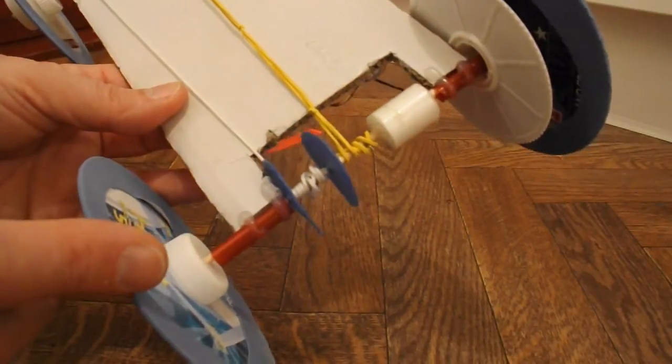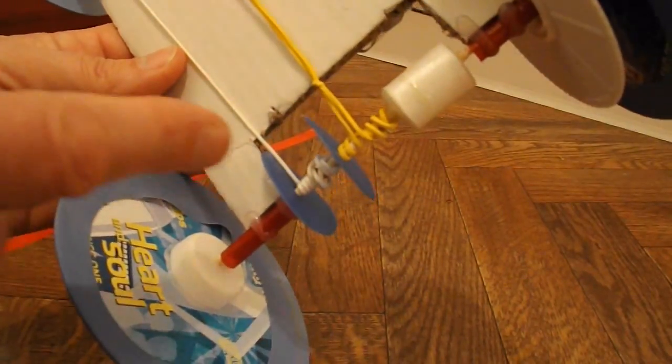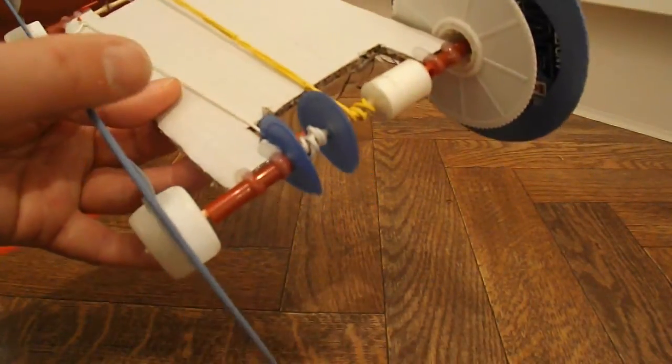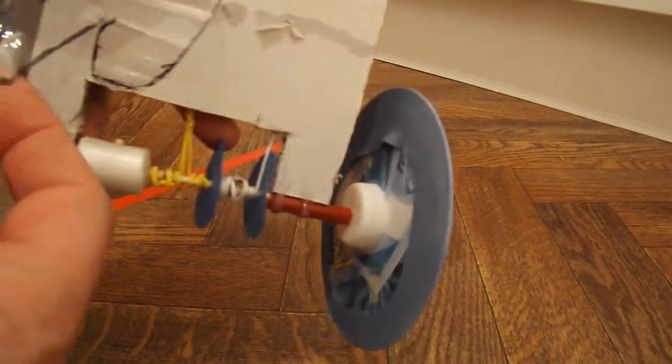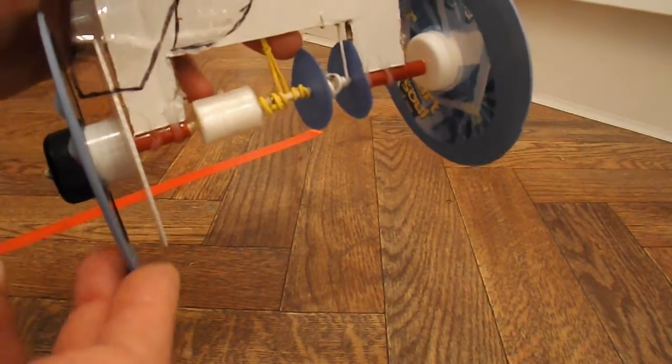And what happened yesterday was, because there's a bit of springiness in that string, the car started going backwards. But with the ratchet, it now can't go backwards.